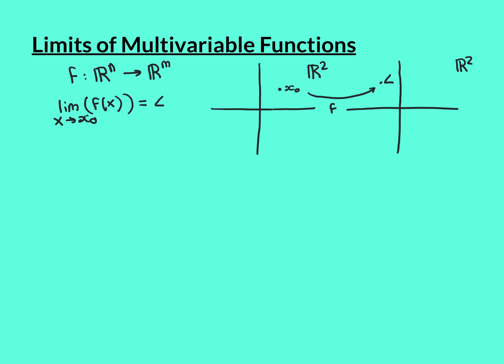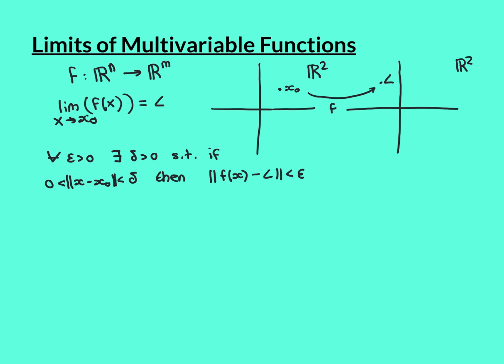We can call the limit L, and to stress that this is no longer just a real number unless m equals 1, but more generally a vector — so in the case of R2 to R2, L will be a vector in R2, a two-dimensional vector. Let's begin with the epsilon-delta definition for the limit of a multivariable function, and then we'll see the sequence characterisation.